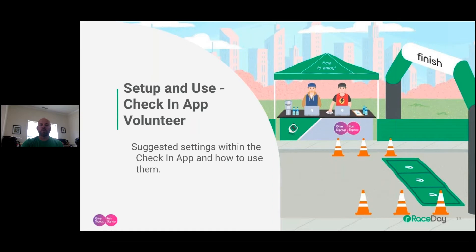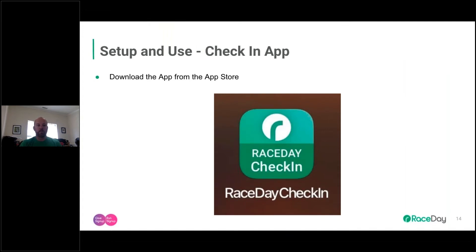Once you've gotten the app set up on RunSignup, you'll move to setting up and using the check-in app for volunteers on the actual app. The first thing you need to do is download the app from the app store. Search for 'Race Day Check-In' or 'RunSignup.' You're looking for a two-tone green Race Day Check-In icon. You'll need this on all devices you plan to use for check-in.